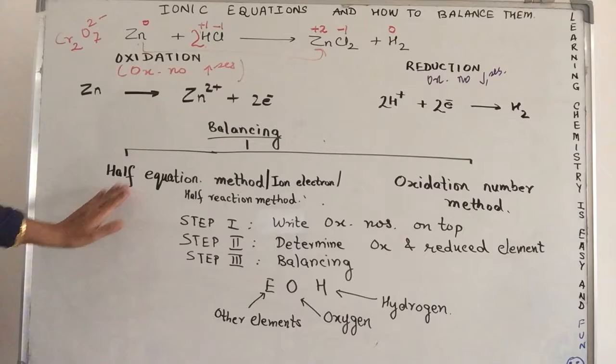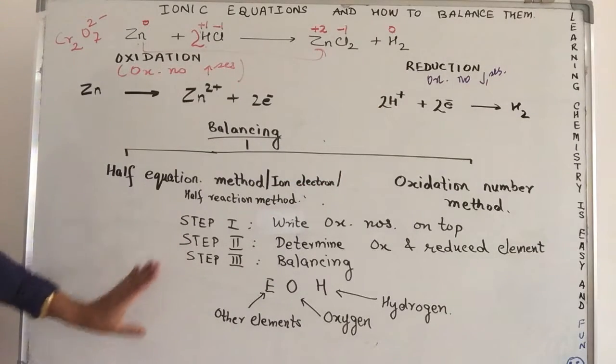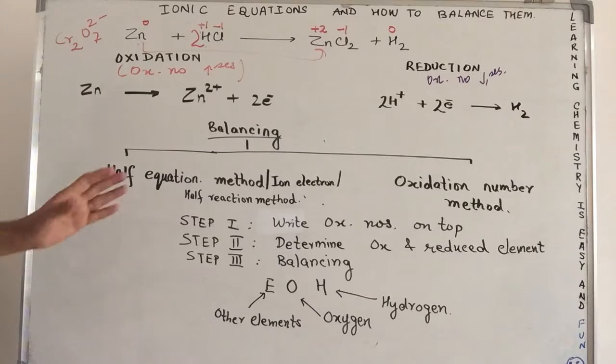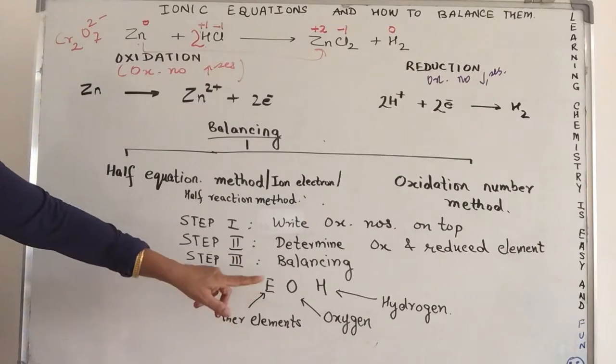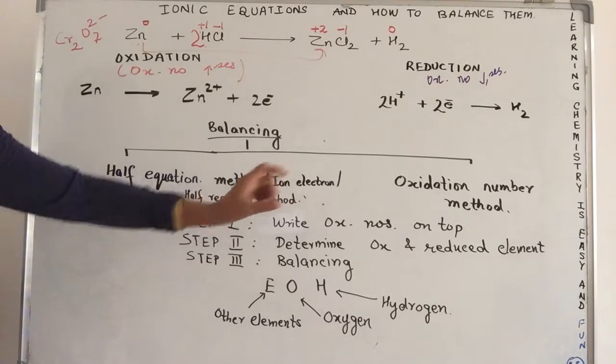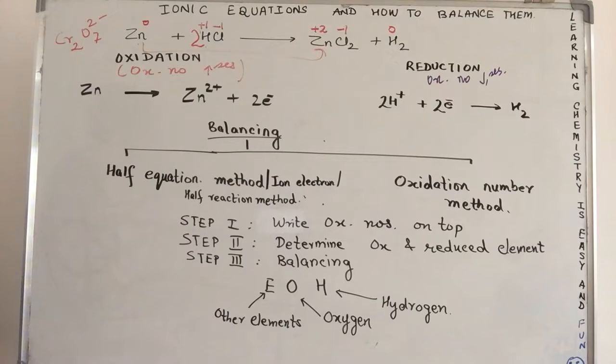Whether you follow the half equation method or the oxidation number method, the steps remain the same. Only thing is, how you approach each of the balancing after, when you balance the other elements, how do you do that?